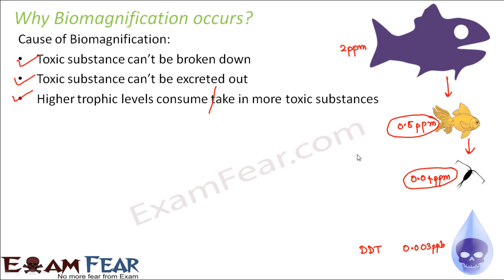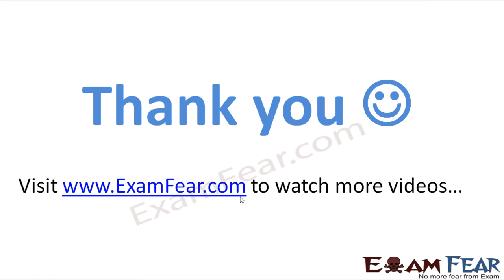Now you can understand how important it is to control water pollution. Because even if the concentration of a poisonous substance is very low in water, it can still be extremely threatening for the aquatic life which is dependent on water. Thank you.